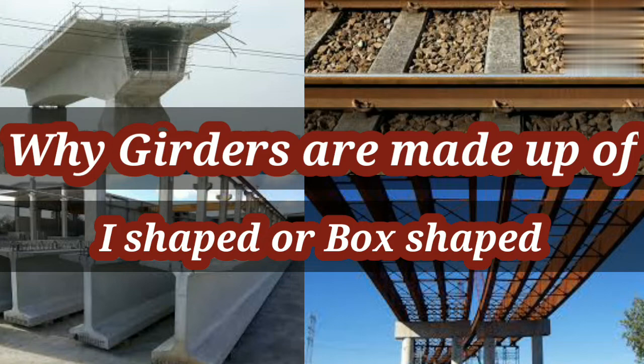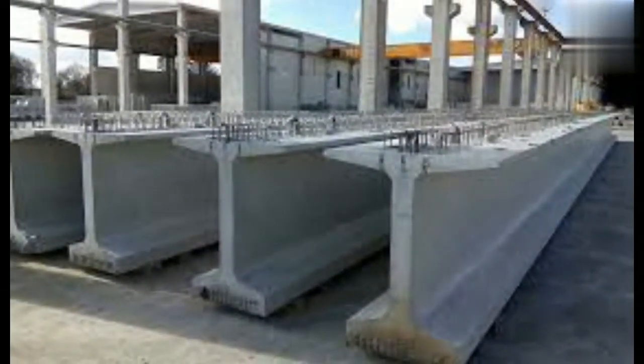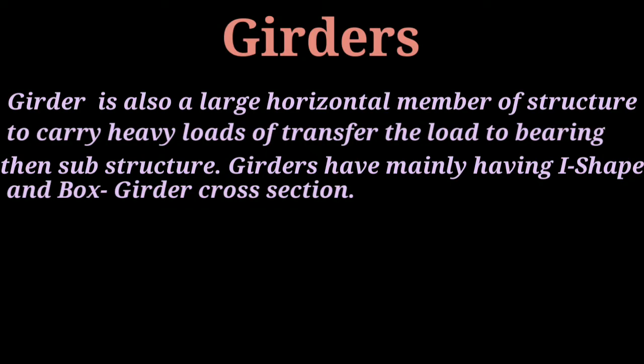If you see the girders — bridge girders, railway tracks — they are made I-shaped. What is the reason they are made I-shaped? Firstly, what are girders? Girders are a type of large beam — a horizontal structure that carries vertical load and transfers the load into the column, then to the footing and the soil. Girders are mainly I-shaped or box girder cross-section type.